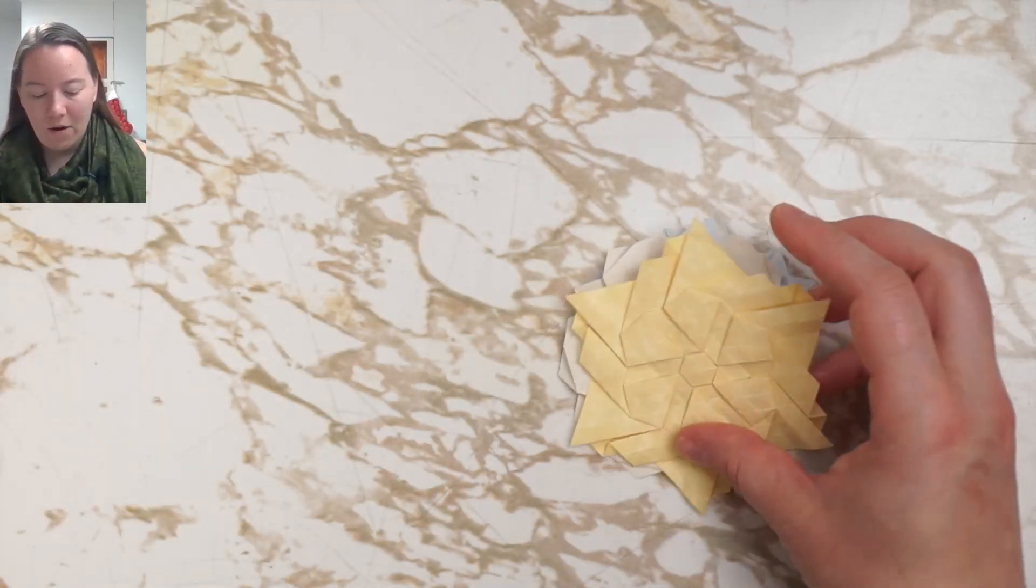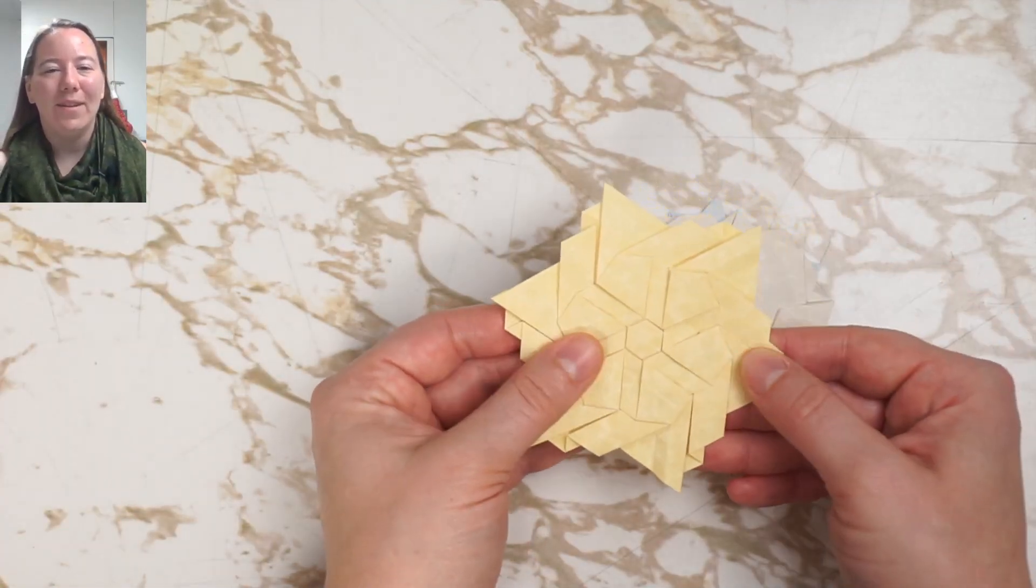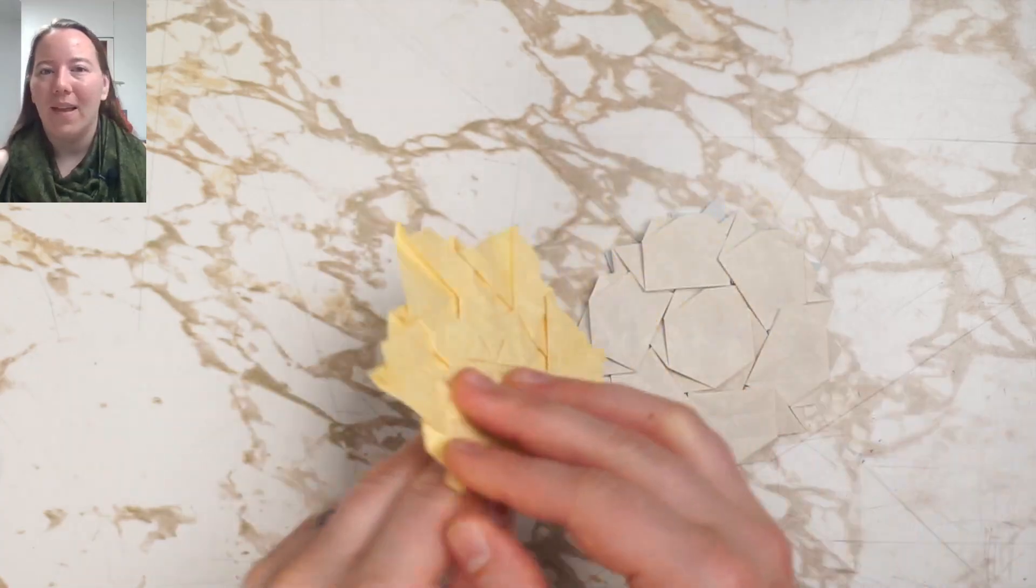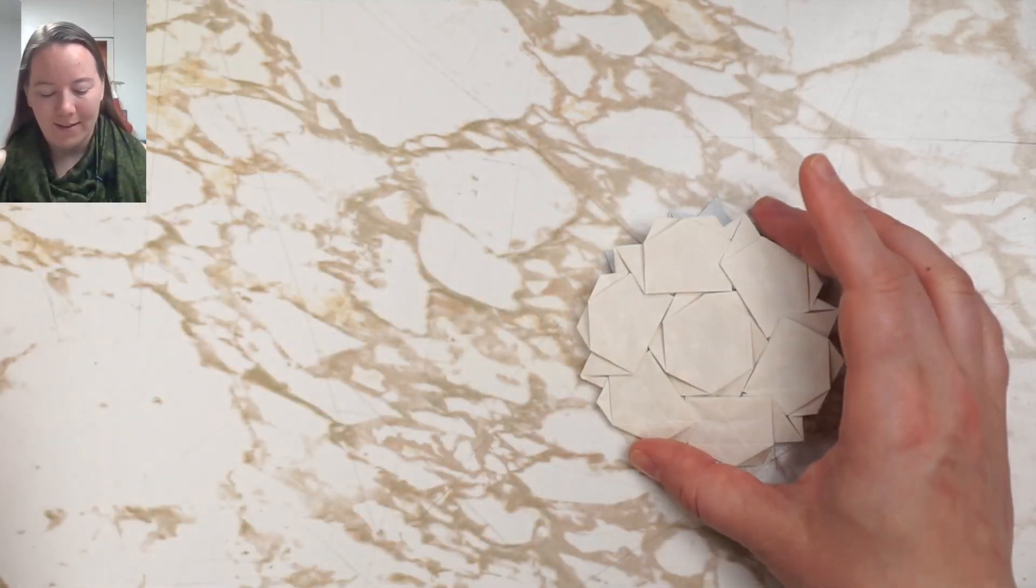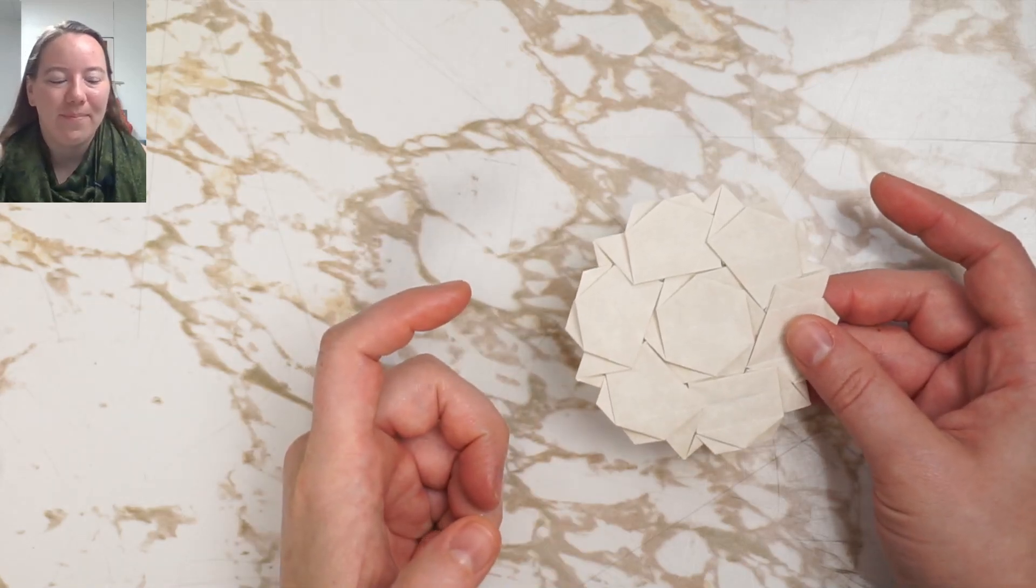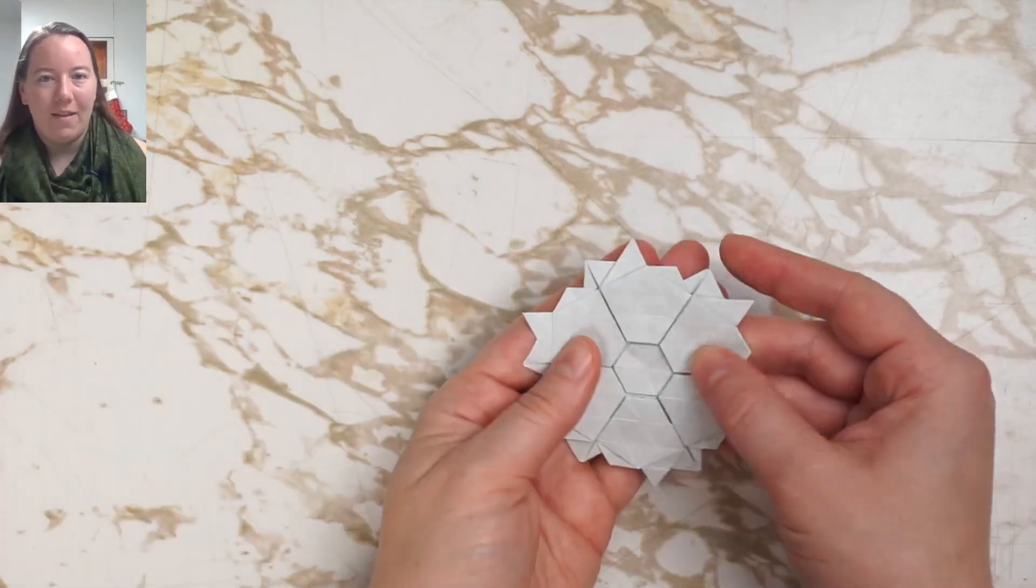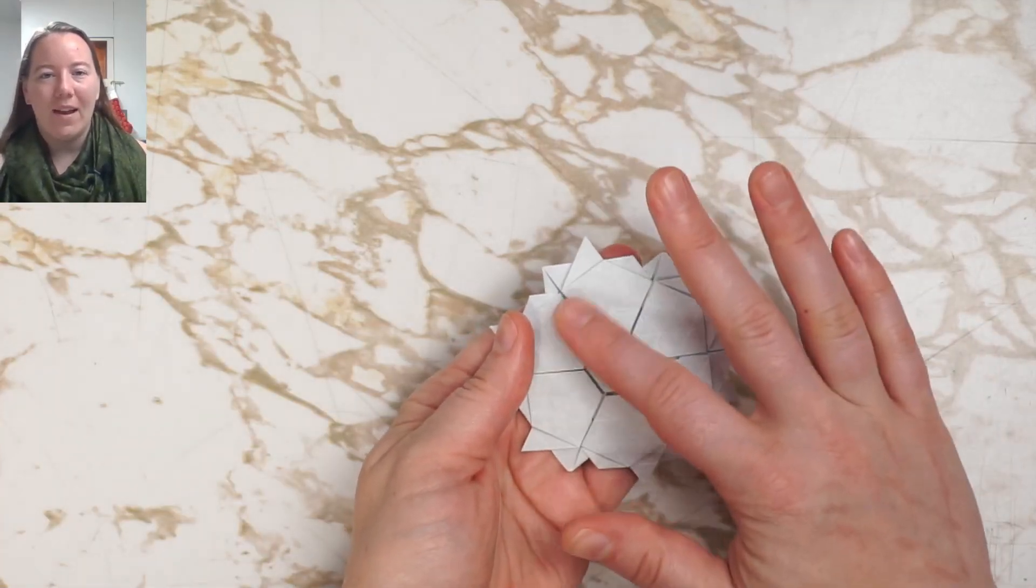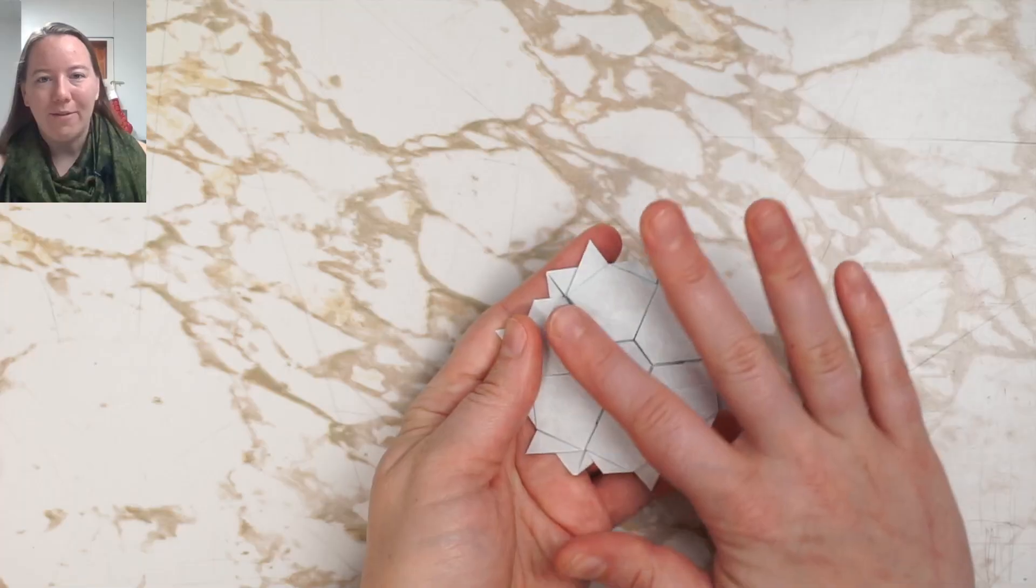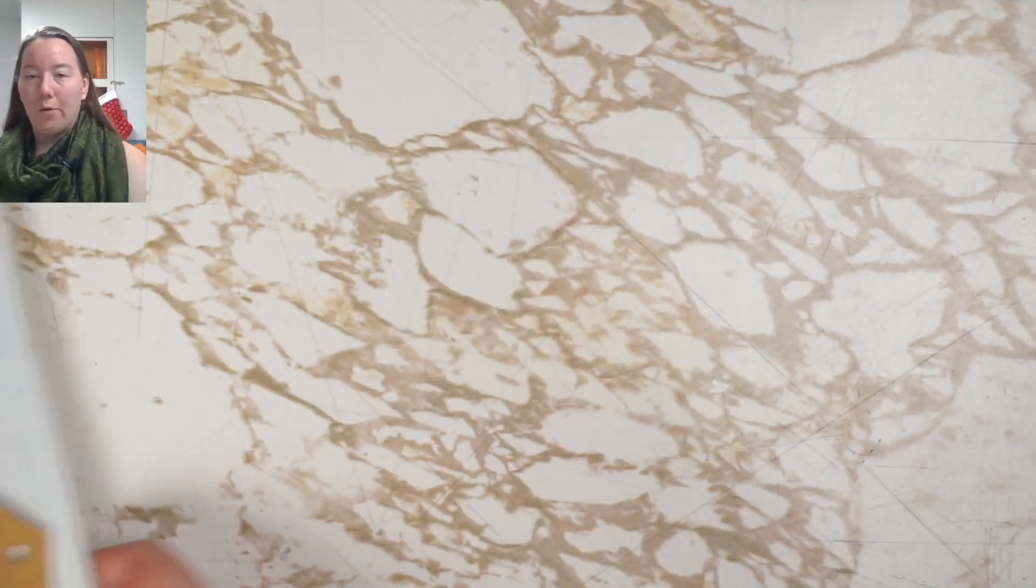And there are so many different patterns that you can fold from any of these little mini tessellation starts. So these are the patterns that we'll be folding. We've got a flagstone motif to round out the set. Now it's time to talk about the supplies and the skills that are needed for folding these patterns.